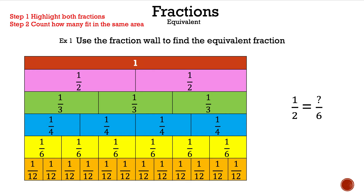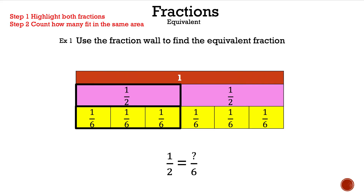So let's look at the fractions on the right. One half is equal to something over six, so we need to compare the halves to the sixths. Let's go ahead and highlight both of those. Now we count how many sixths are in one half: one, two, and three. So one half is equal to three over six.